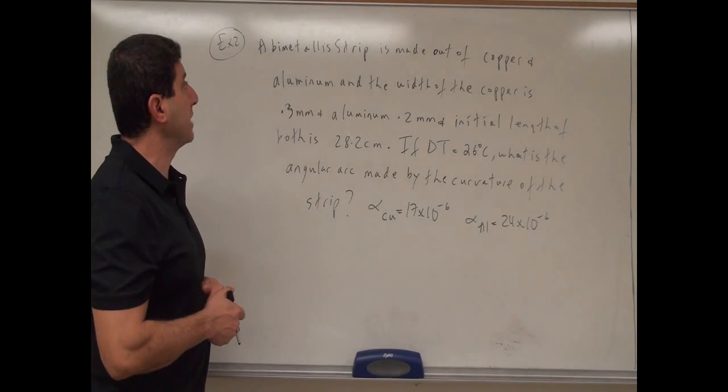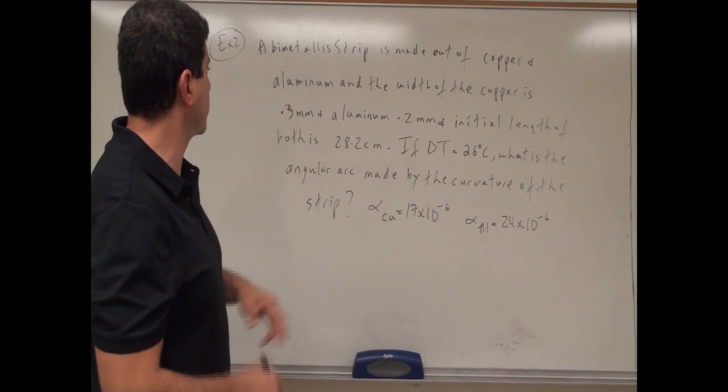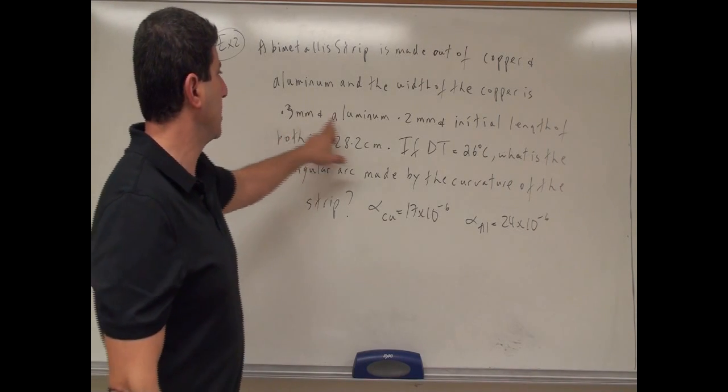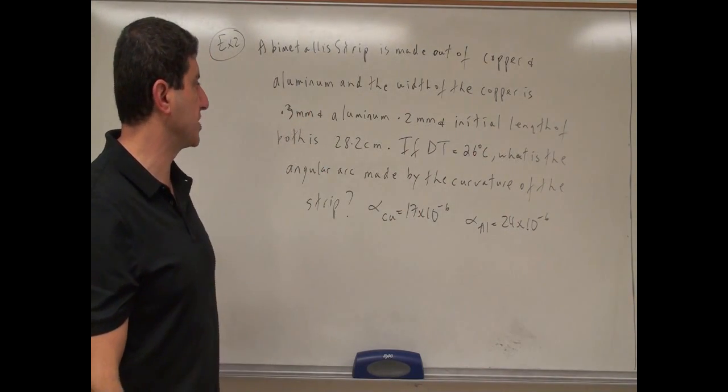Now we come to our second example. It says a bimetallic strip is made out of copper and aluminum, and the width of the copper is 0.3 millimeters, and the width of the aluminum is 0.2 millimeters, and the initial length of both is 28.2 centimeters.